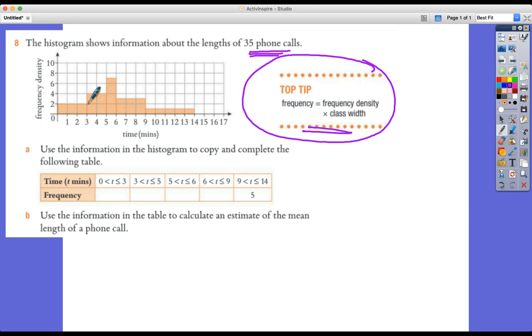Now remember that frequency on a histogram is the area of the bar. So that would make sense. It's the class width times by the frequency density in this case. So what we need to be doing is 3 multiplied by 2, so we get 6.